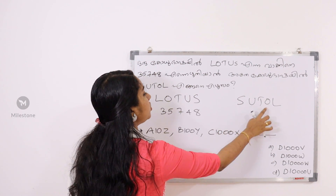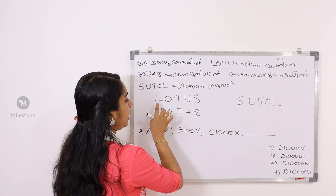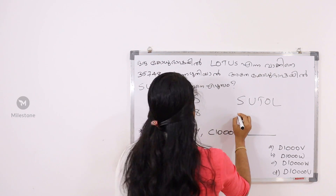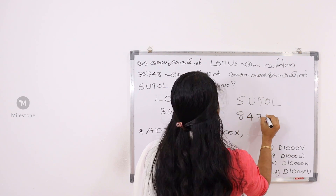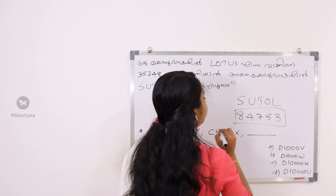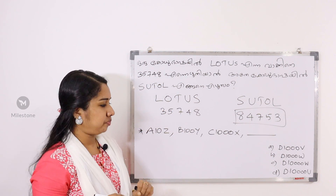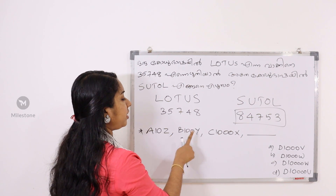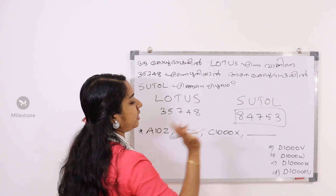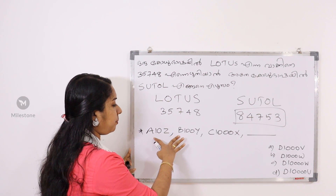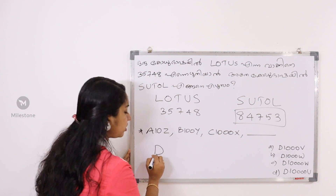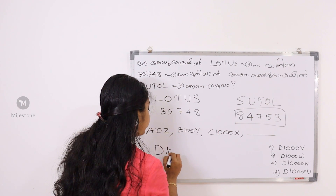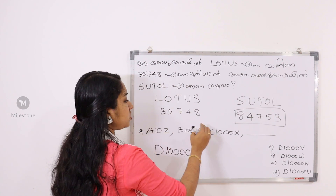Lotus is called Sutol. Now let's see the numbers: 8, 4, 7, 5, 3. Next question: A, 10, Z — B, 100, Y — C, 1000, X. So A, B, C — what is it? D, 10, 100, 000. What is it? 10,000.